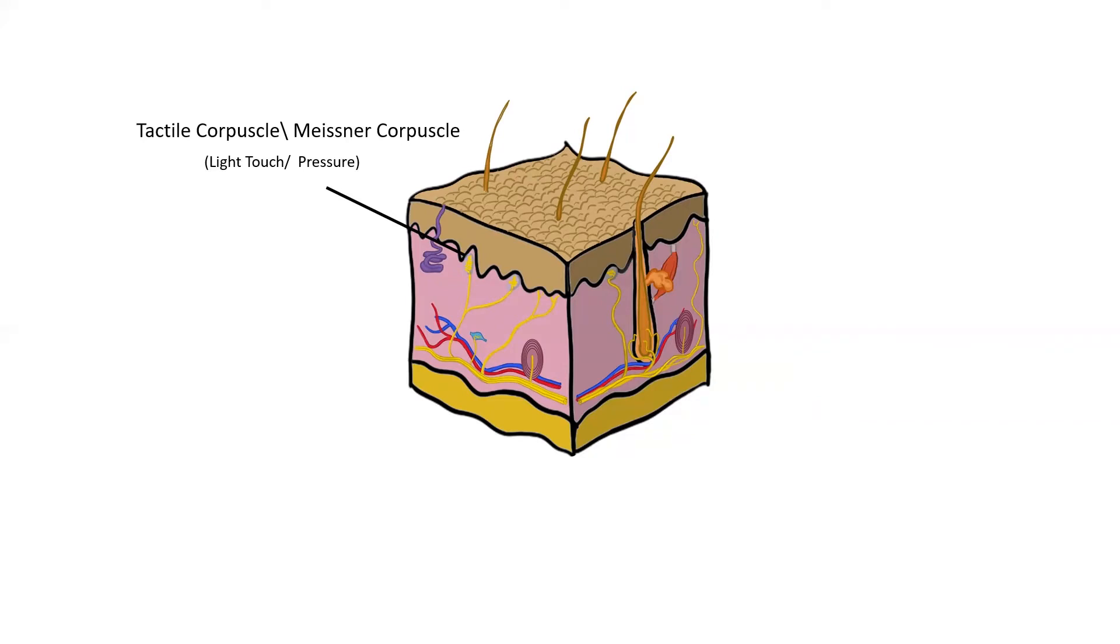You're really going to find the tactile corpuscles in the papillae of the skin. And by papillae, I mean these little projections that stick up from the dermal layer into the epidermal layer. And again, they're used for light touch and pressure. So they're very superficial compared to a lot of these other receptors, which makes sense to what their function is.